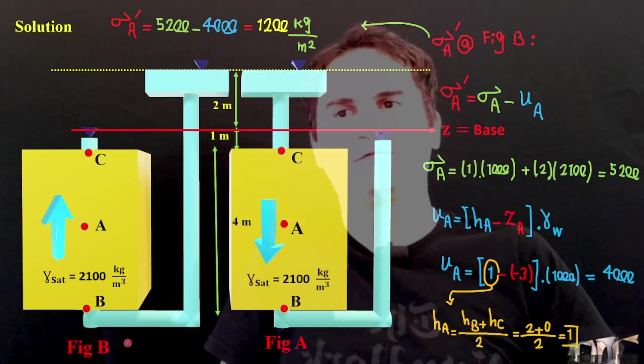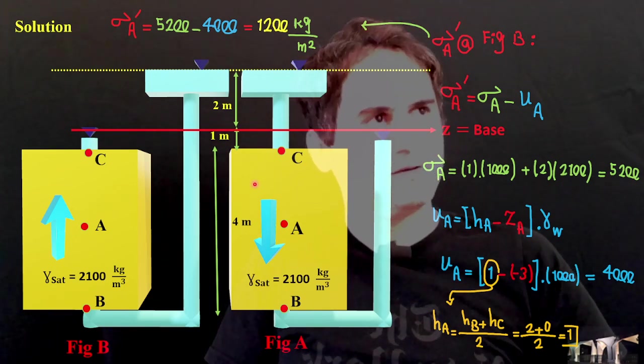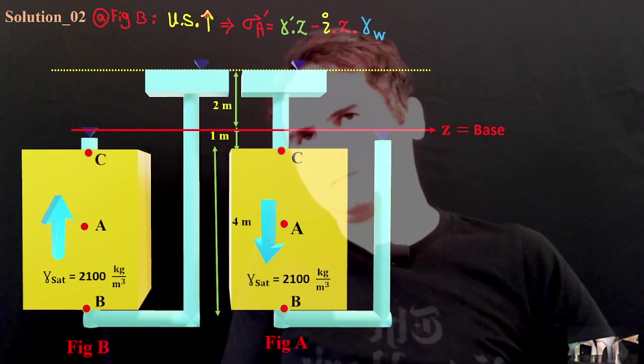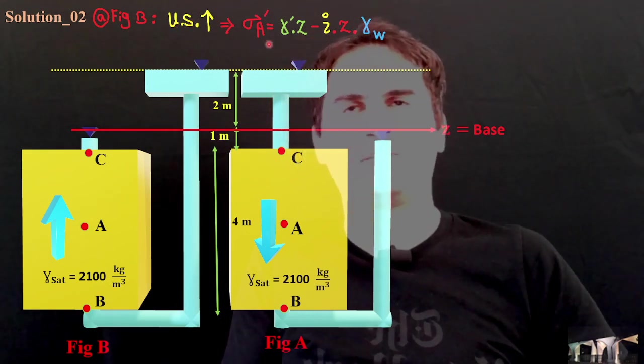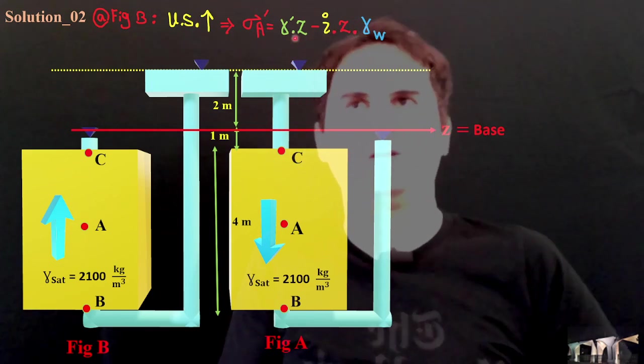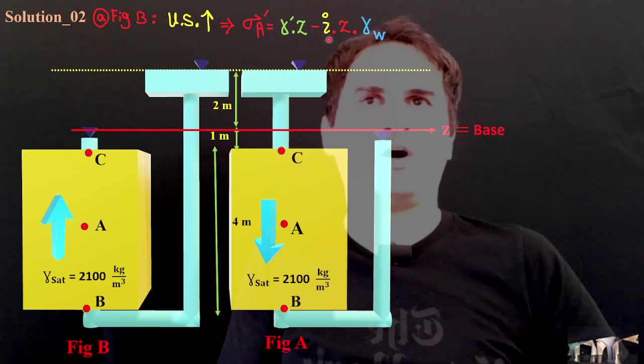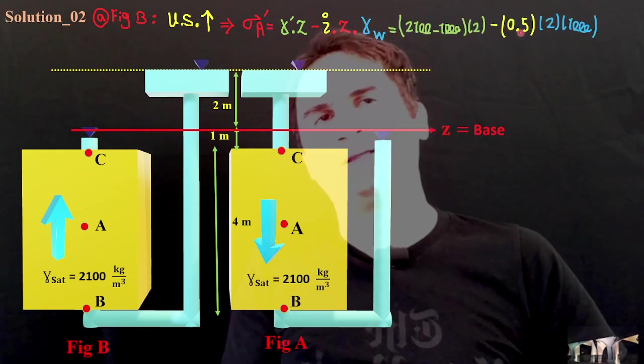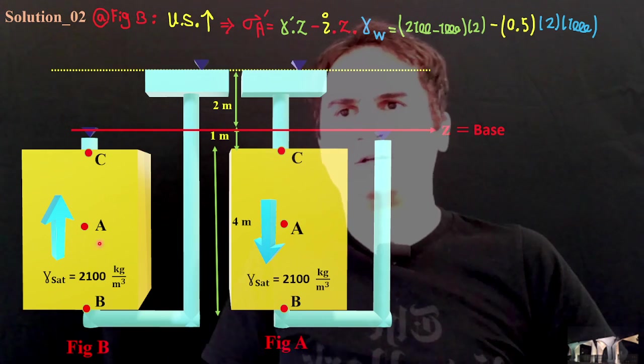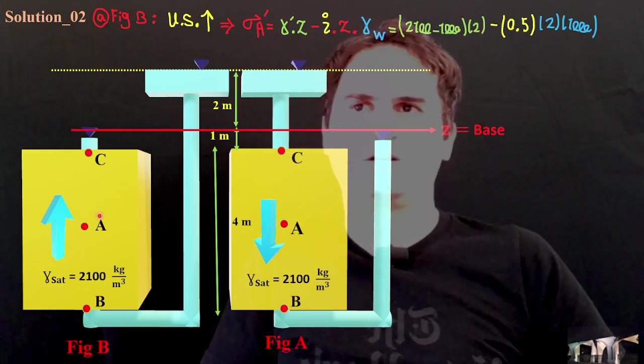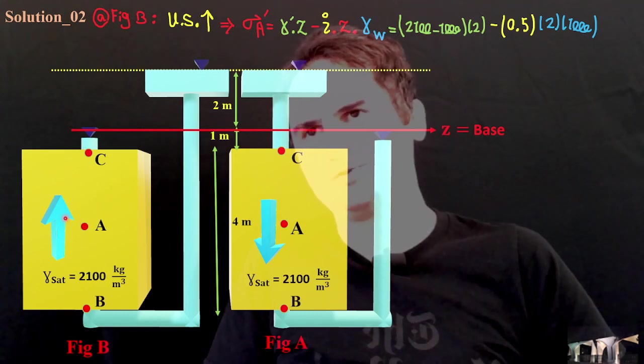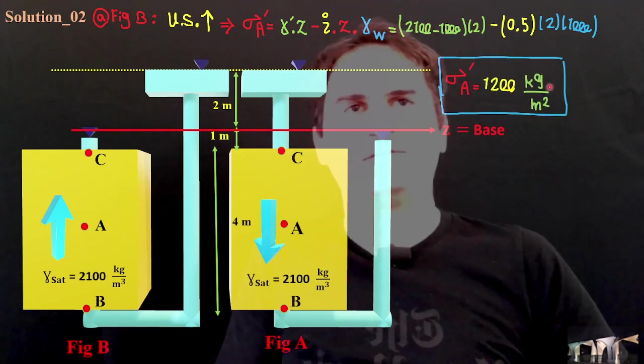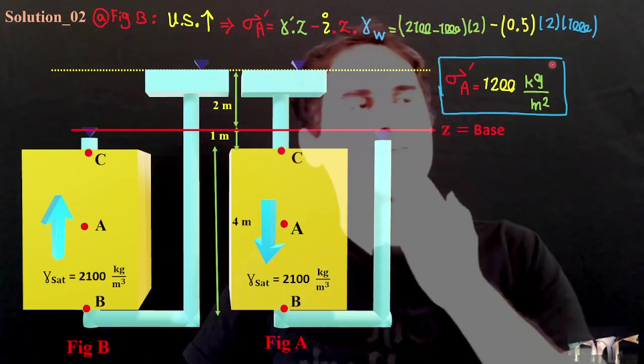Can also solve the soil in figure B by the easier approach as well. But you need to be careful. In upward seepage, sigma prime is gamma prime Z minus IZ gamma W. Downward seepage, we add IZ plus IZ gamma. But in upward seepage, that's a negative IZ gamma W. If you replace that, I remains the same. Gamma prime is gamma saturate minus gamma water times the height or depth of soil from C to A, which is 2 meters, halfway through if the total is 4 meters. And it just gives us 1,200 kg over meter squared like previous method.